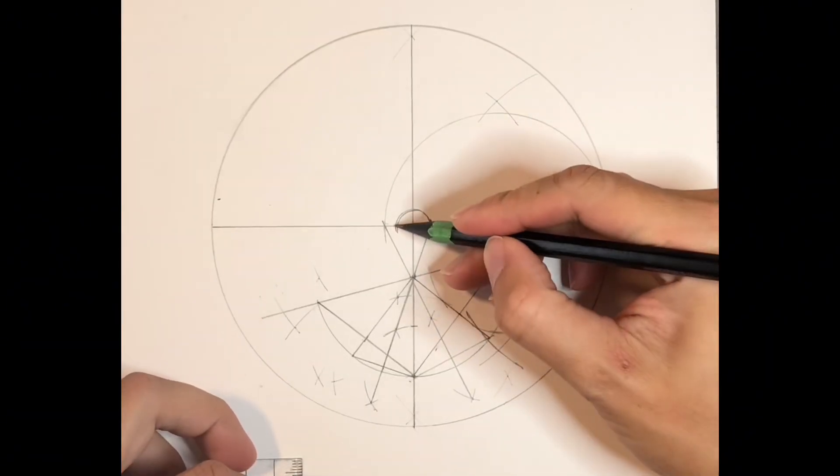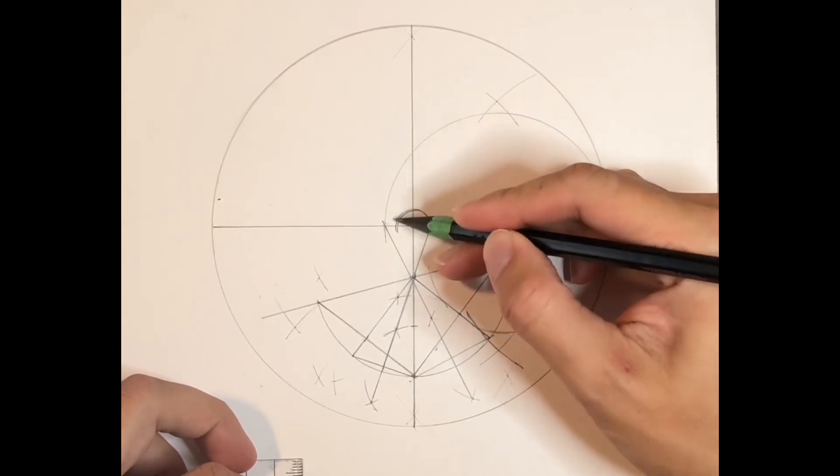Okay, so we have this contact point. At this point, we're going to draw a line. This line will be the radius for the semicircle.